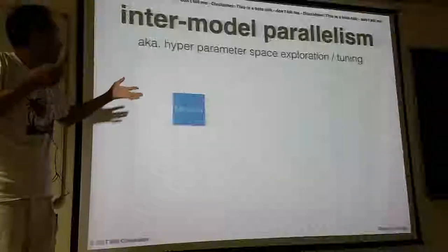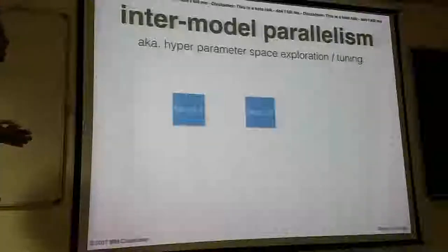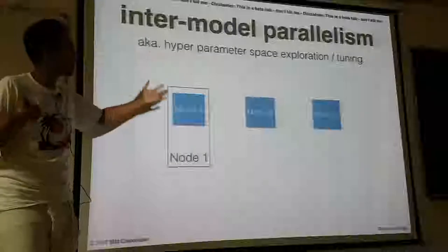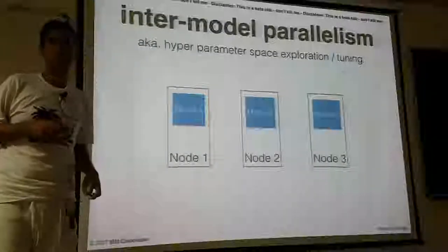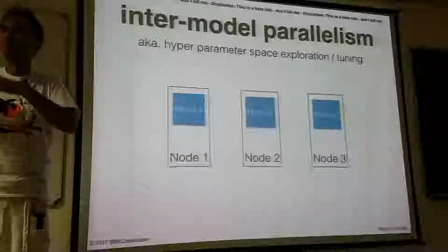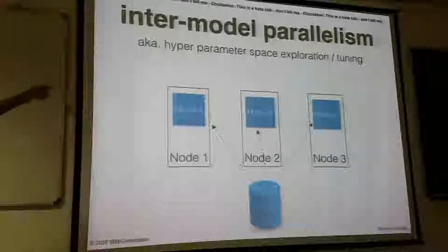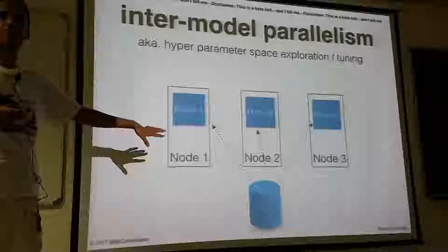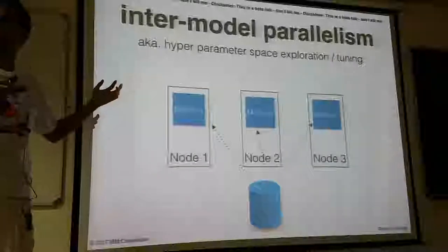It's just a brute force evaluation — that's something you can do easily. You put one model with hyperparameters on one node and two others on other nodes. It's just copying the model, changing the hyperparameters, and running it. Then you show each model the same amount of data and choose based on the accuracy score which model to take.